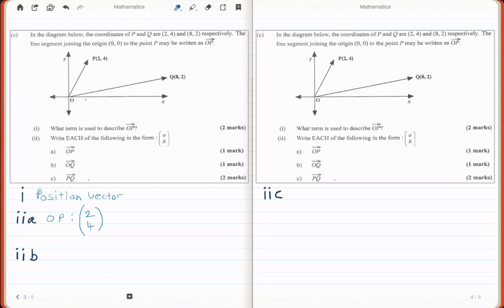Likewise, OQ is coming from the origin to Q, therefore we look at the coordinate 8, 2, and in a column form, OQ is 8 on 2.